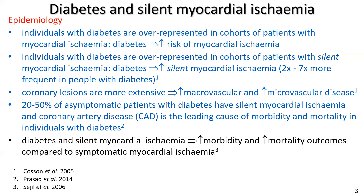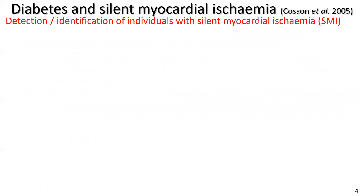Peripheral arterial disease is also a leading cause of morbidity. Diabetes and silent myocardial ischemia carry higher rates of morbidity and mortality compared to people with diabetes who are symptomatic — for example, who develop chest pain. I'll refer these points to the excellent review by Cossin and colleagues. Although that review is 15 years old, many points are relevant to us as exercise professionals.